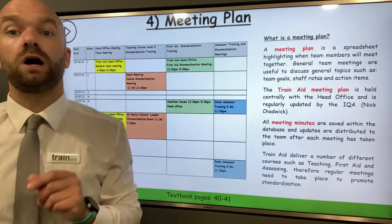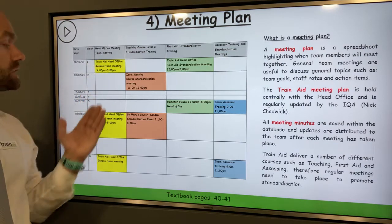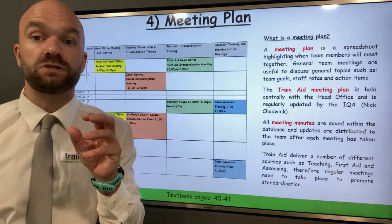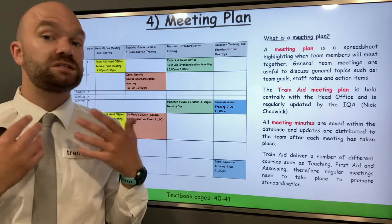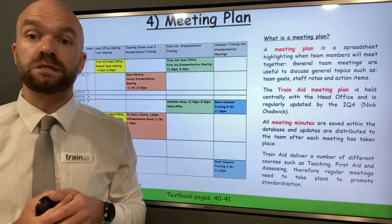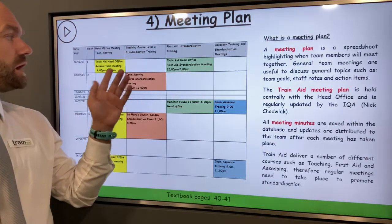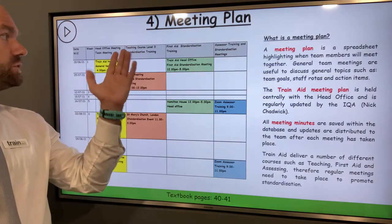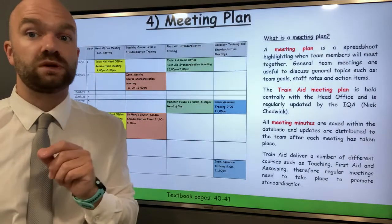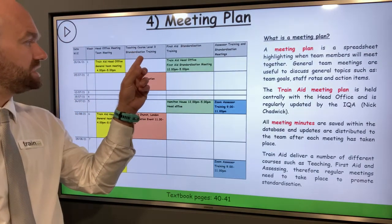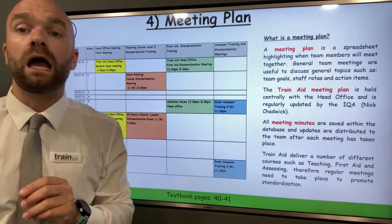Here behind me, we have an example of a meeting plan. We have the dates here, and we have a column in yellow — this is the general team meeting. These are our monthly team meetings where the team meets together to discuss general topics at TrainAid, such as course numbers and key dates. We also have standardisation dates for our courses, including the Level 3 Awards in Education and Training, first aid standardisation events, and assessor training and standardisation meetings.